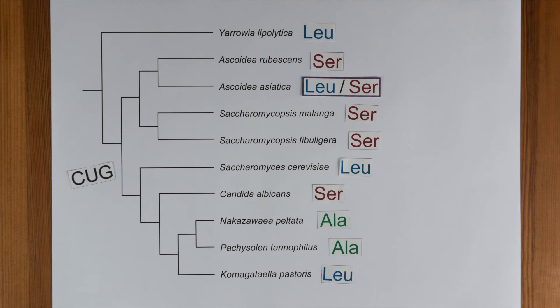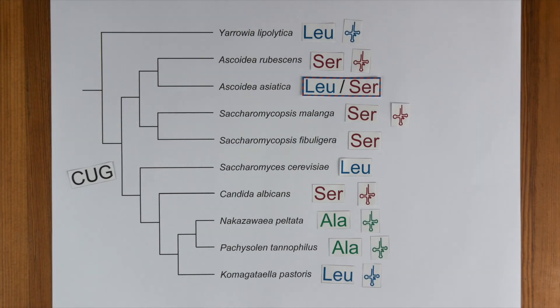How could that be? We took a closer look at the tRNAs responsible for translating CTG. Most species behave as expected. Surprisingly, Saccharomycopsis also encodes a leucine tRNA. This must be inactive, as CTG is only translated as serine.